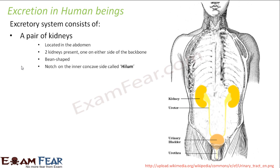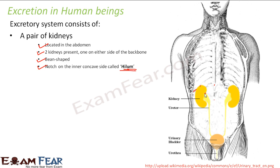The kidneys are located in the abdomen. The thoracic cavity ends and the abdominal cavity begins here. Two kidneys are present, one on either side of the backbone. Their shapes are in the form of a bean. There is a notch on the inner concave side of each kidney that is called the hilum — this notch-like structure on the inner side.